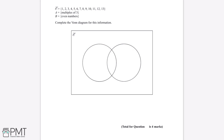The universal set is 1 to 13, A equals multiples of 3, B equals even numbers. Complete the Venn diagram for this information. The universal set is all of the values which we need to place inside this Venn diagram. The first thing we'll want to do is label these circles A and B.